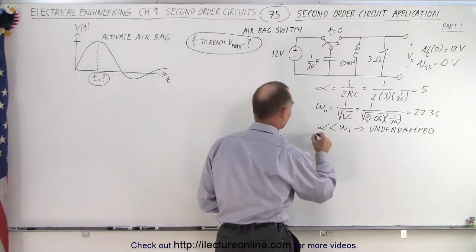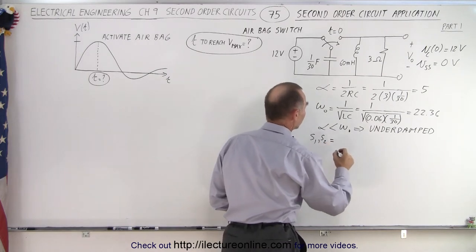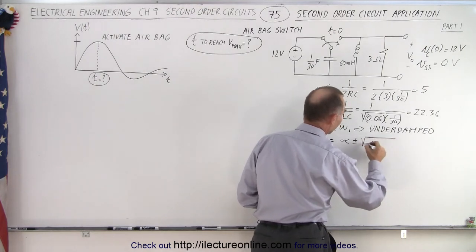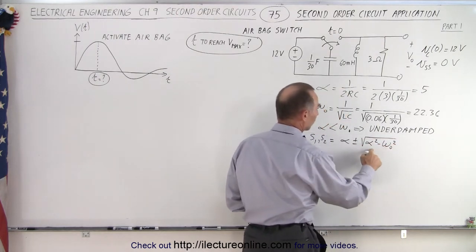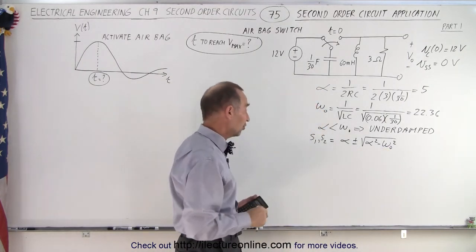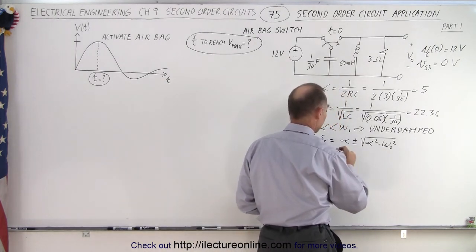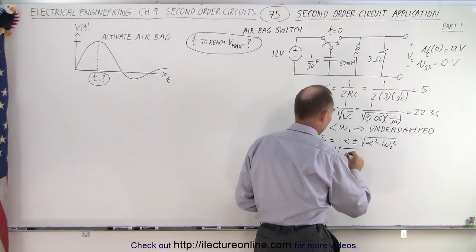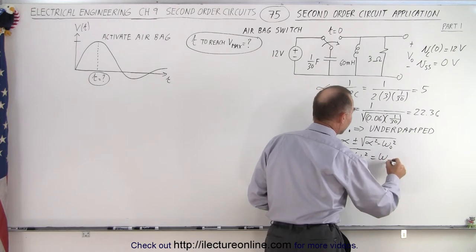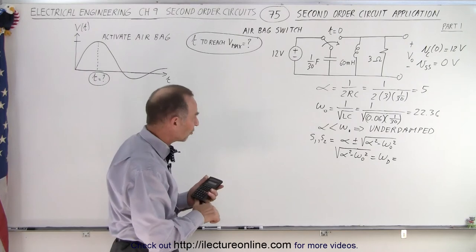That means S1 and S2 are going to be equal to negative alpha plus or minus the square root of alpha squared minus omega sub-naught squared. We realize that this quantity will be negative, and the square root of a negative quantity will be imaginary. So the square root of alpha squared minus omega sub-naught squared will equal the damped oscillation frequency omega_d, which we're going to need to plug into the equation.